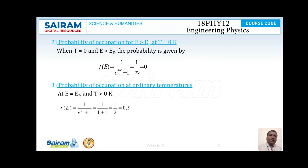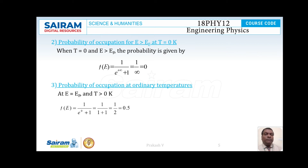The second case is the probability of occupation for E greater than EF at T = 0 Kelvin. Here we consider an energy level above the Fermi level at T = 0 Kelvin. Substituting all values in the equation, we get F(E) = 1 / [e^(+∞) + 1]. Since e^(+∞) = ∞, F(E) = 1 / ∞ = 0. So for this case, the value of F(E) is equal to 0.